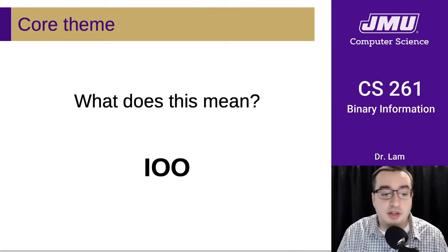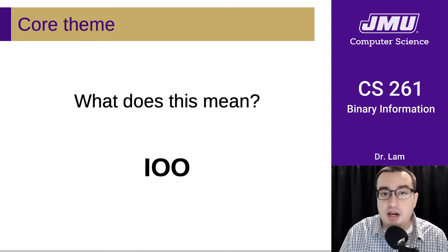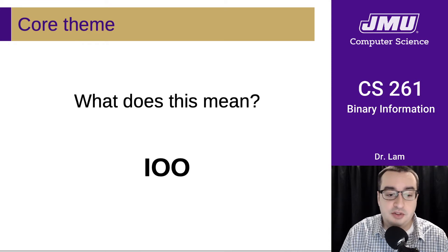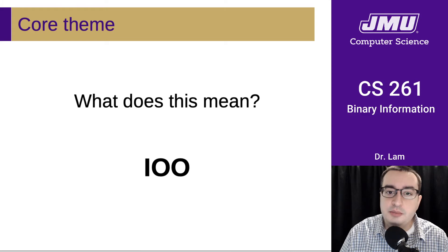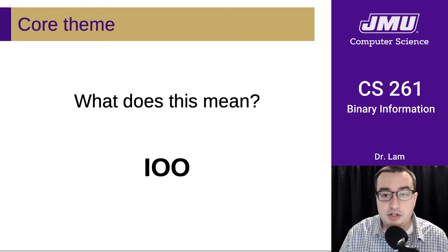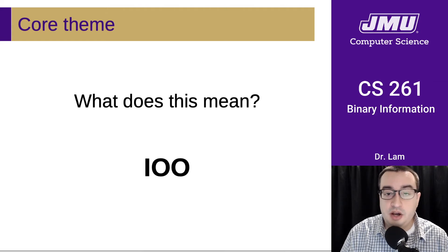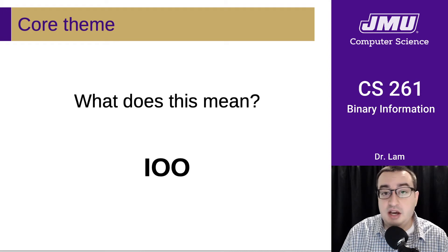When I do this in class, I get a huge variety of different answers, and the punchline is that they're nearly all correct. The most straightforward meaning is that if you interpret this as 1-0-0 in base 10, this is 100. But this is not the only interpretation. Students suggest binary, so if this was encoded in binary, it would be the decimal number 4. You could also interpret it in hex, in which case this would be 256. Or you can interpret these as characters, in which case they might just be I-O-O. There are a number of different ways you could interpret this.